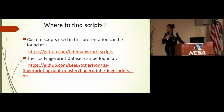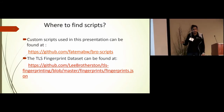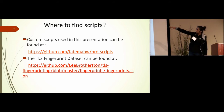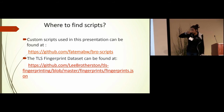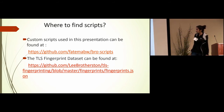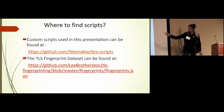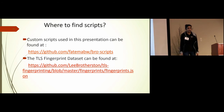Where to find scripts: all the scripts mentioned for inventory data can be found on the GitHub account I referenced, and the TLS fingerprint dataset used for fingerprinting can be found on Lee Brotherston's GitHub account. They have different file formats including gzip and JSON — go to their repository to see what database file types are available.